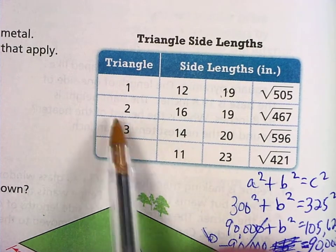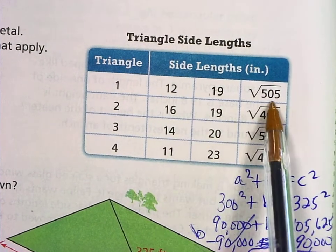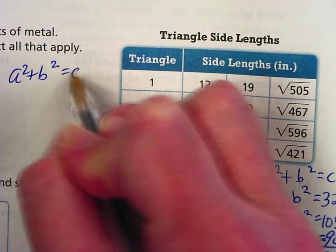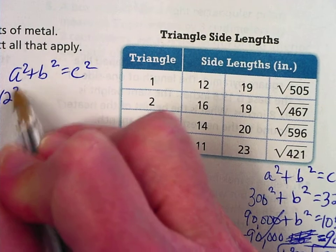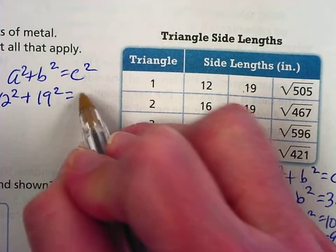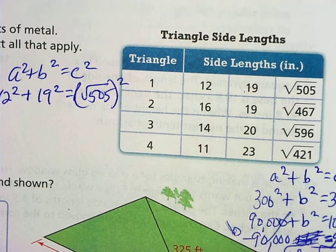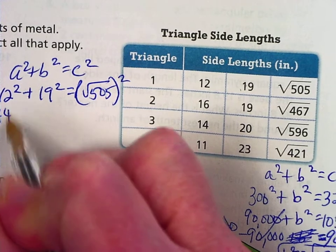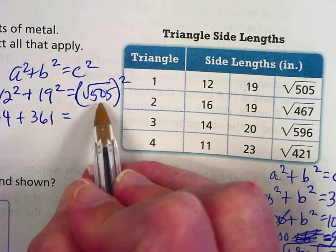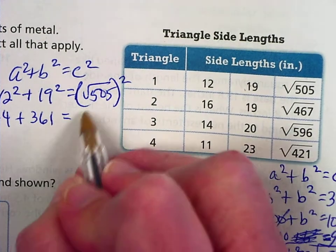Let's see which one of these are right triangles. If we have three side lengths, this is the biggest number out of the three. So this has to be my C. Let's plug that in. A squared plus B squared equals C squared. So let's make 12 squared plus 19 squared. Those are your A and B, your two legs. And then the square root of 505 in parentheses squared, we're going to square that. So 12 times 12 is 144. 19 times 19 is 361. And then the square root of 505 times the square root of 505 is 505.